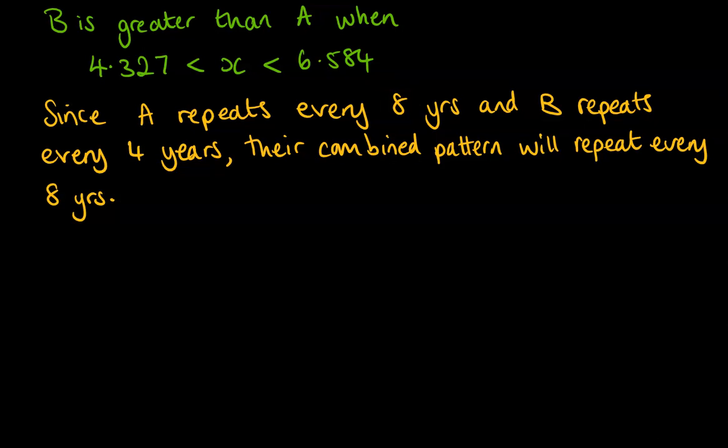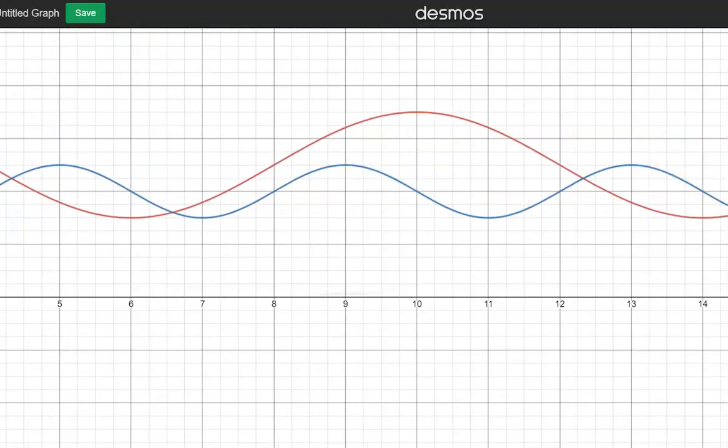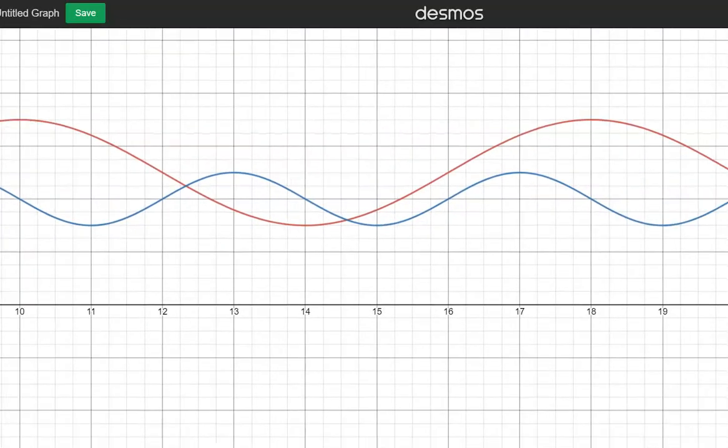Now we need to write that into our general solution. So this bit up here, the 4.327, the 6.584, that will happen again another eight years on. So we could add eight to both of those numbers and find the next section on this graph here. So if we go for the next section here, where that pattern happens again is those two numbers that we had to begin with, but plus eight.